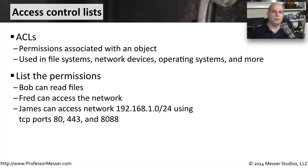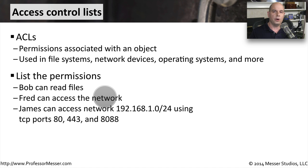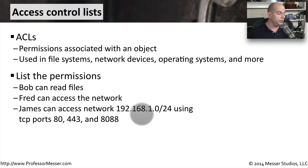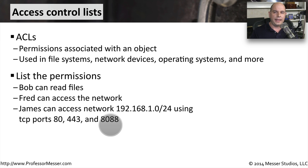An ACL usually refers to a set of permissions applied to an object. For example, Bob can read certain files on a file server, or Fred can access a certain part of the network. They can also be very specific — for instance, James can access network 192.168.1.0/24 if he is using TCP ports 80, 443, and 8088.